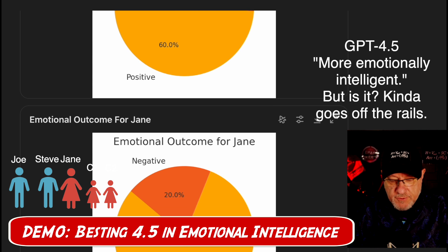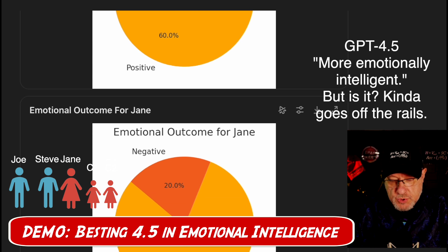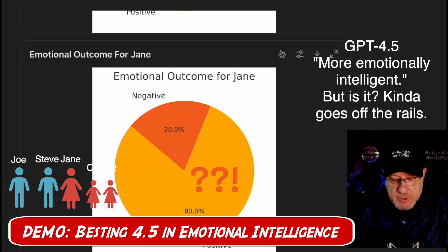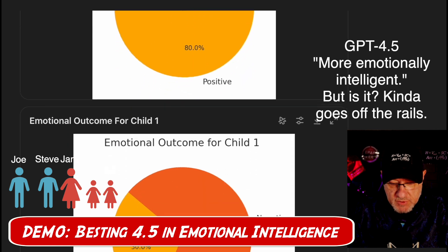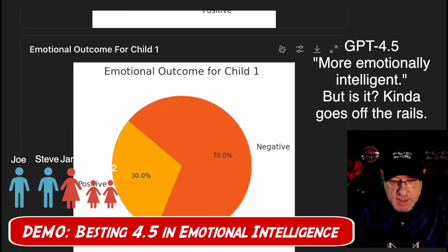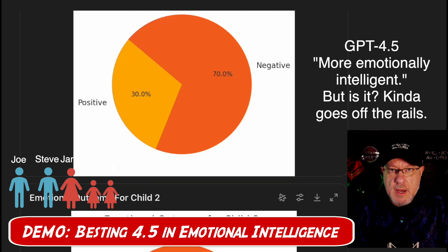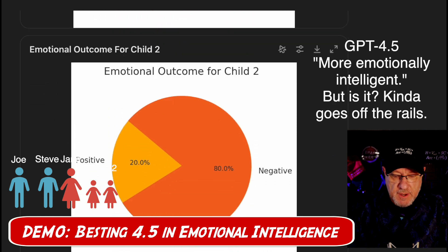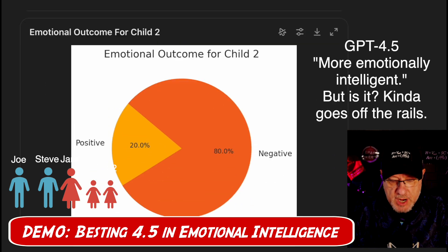This is the outcome for Jane, whose children had been traumatized by a haunted house, and she's 80% positive and 20% negative. Then here's the outcome for child one — 80% and 20% — and interestingly enough, a similar result for the second child.